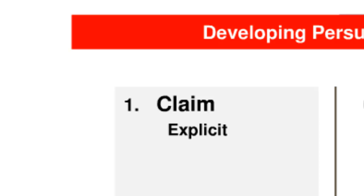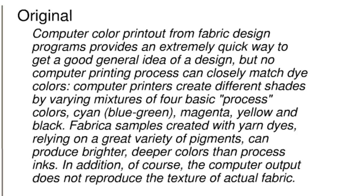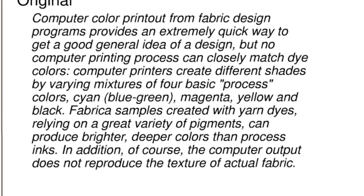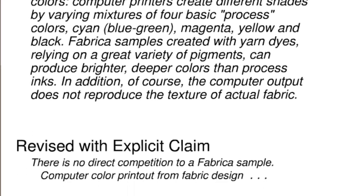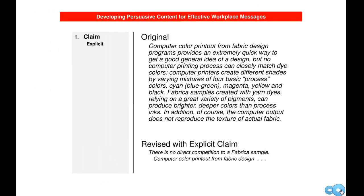Take a minute to look at this passage which appears within Fabrica's business plan. Your task is to identify the writer's claim. You probably struggled to identify the point or claim being made in this passage — that's because the writer did not actually state it. The writer could increase the readiness of the audience by providing an explicit claim, especially if it was included at the beginning of the passage.